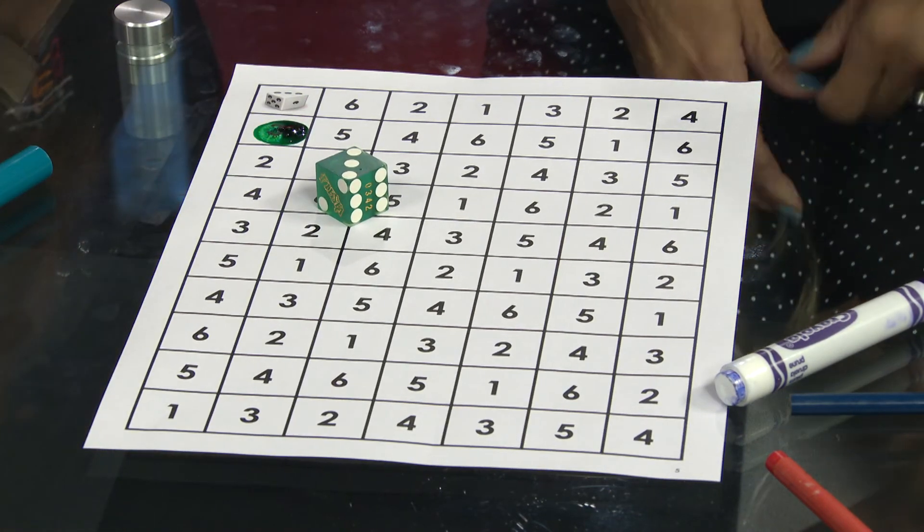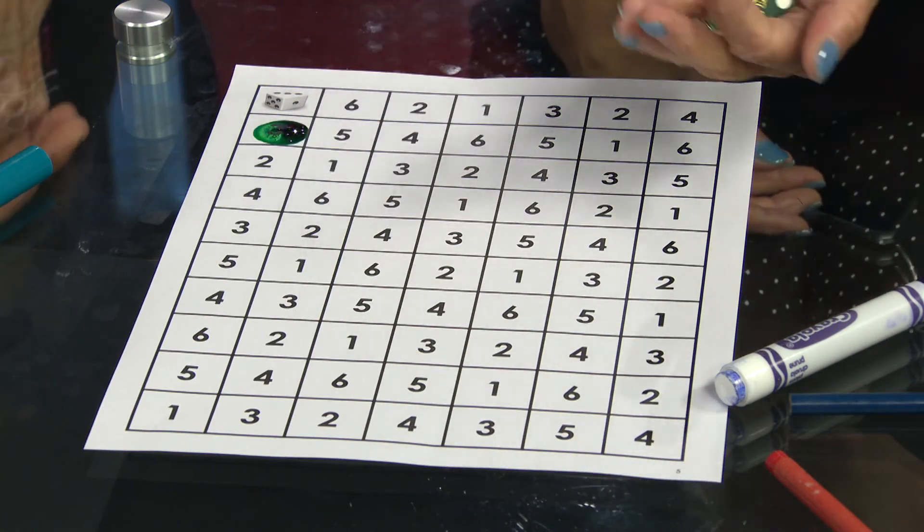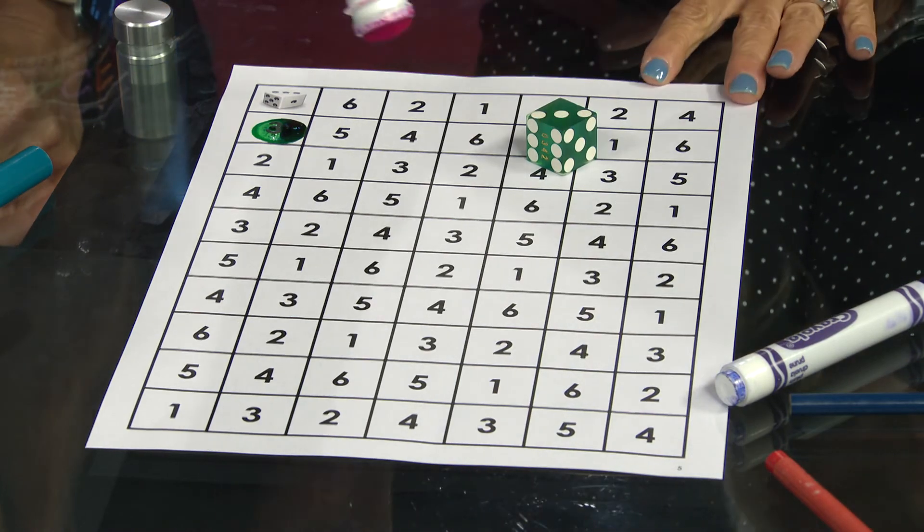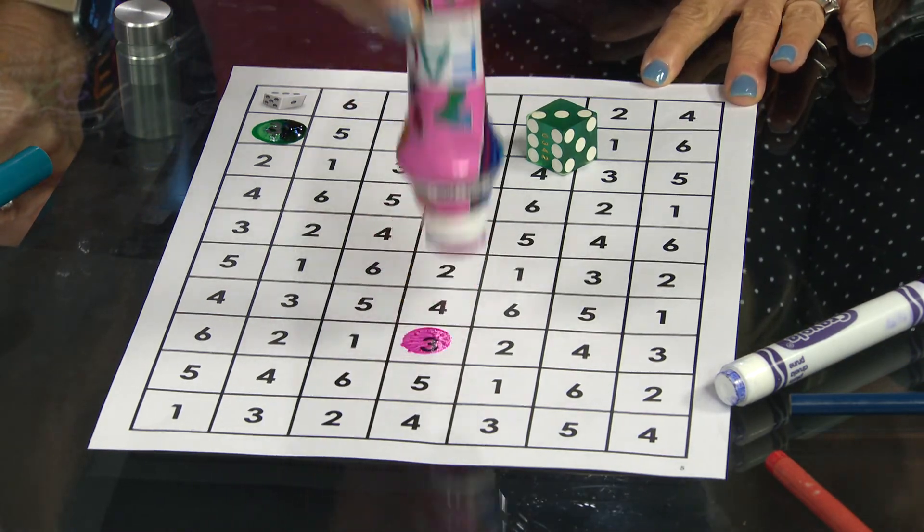So if you rolled a three, what numeral would you color in? Exactly! A three! Please pause here and play it on your own for just a bit.